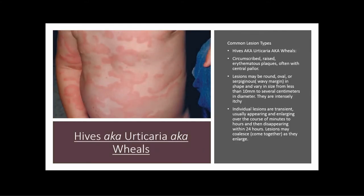The next term is hives, also known as urticaria or wheals. These are circumscribed, raised, erythematous plaques associated with central pallor — in the middle of these lesions it's lighter or paler, going out to redder at the margins. Lesions may be round, oval, or serpiginous with wavy margins, and vary in size from less than one centimeter to several centimeters in diameter. They are intensely itchy. Individual lesions are transient, usually appearing and enlarging over minutes to hours, then disappearing within 24 hours. Lesions may coalesce or come together as they enlarge.